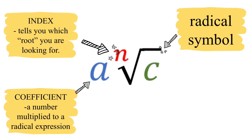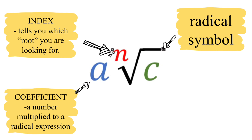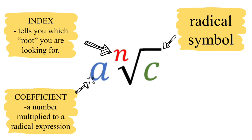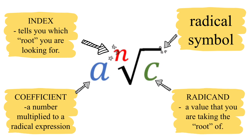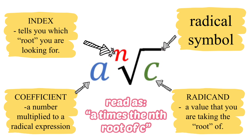The letter N here is called the index. This tells you which root you're looking for. Please remember that if the value of the index is not written, that invisible number is 2. We also have a letter C, and this letter C is named the radicand — the value that you are taking the root of. So this expression is read as A times the nth root of C.